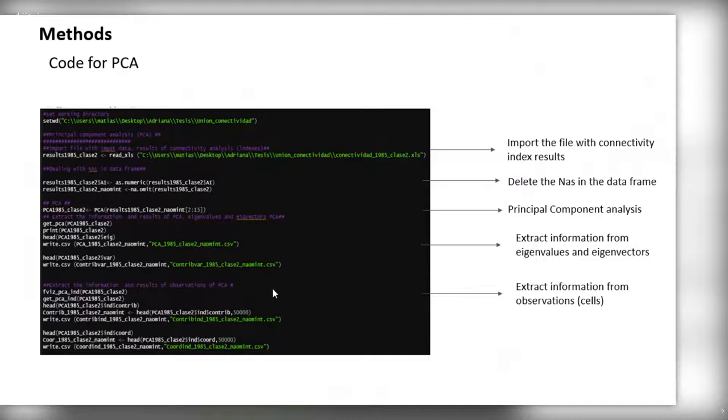This is the code for PCA. First import the file with connectivity index results. Later delete the NAs in the data frame. And later performs principal component analysis. Finally, extract the information for eigenvalues, eigenvectors, and information for observations.